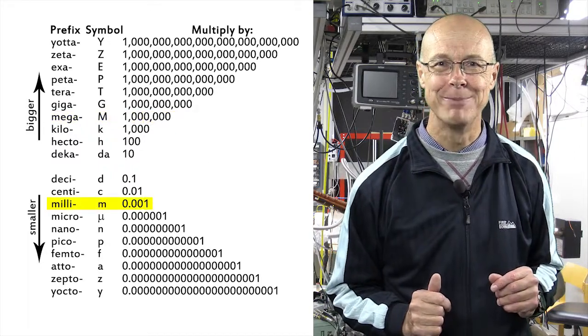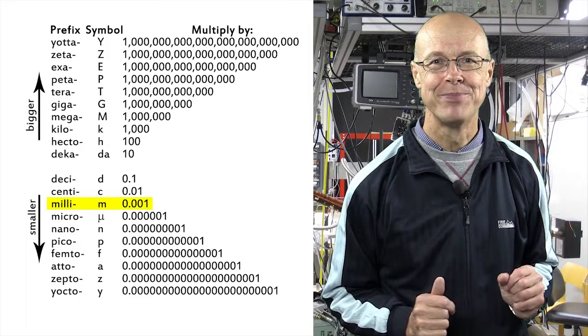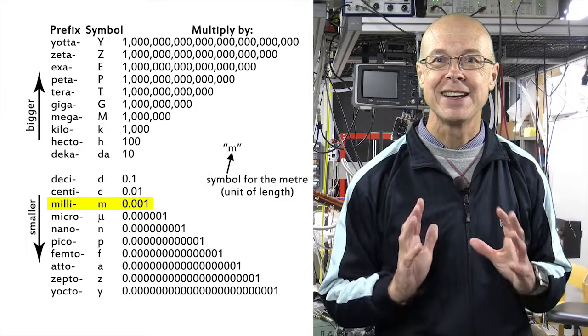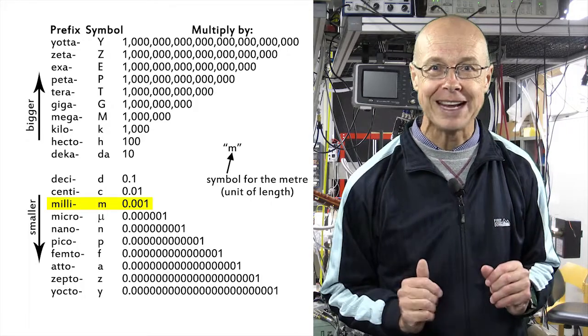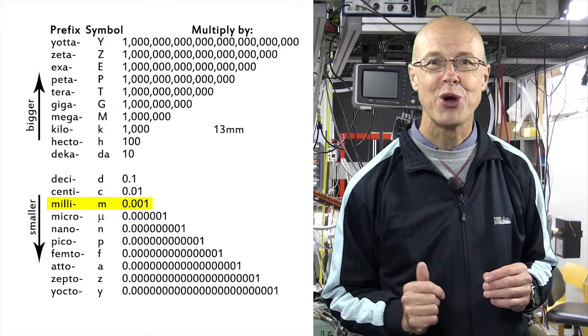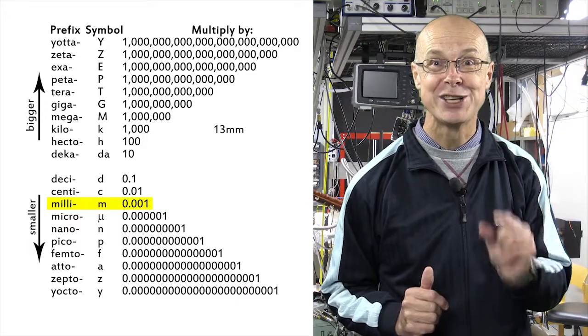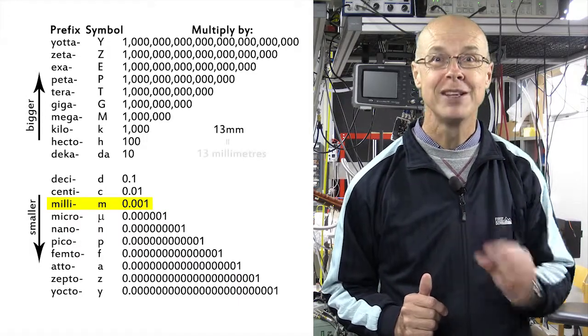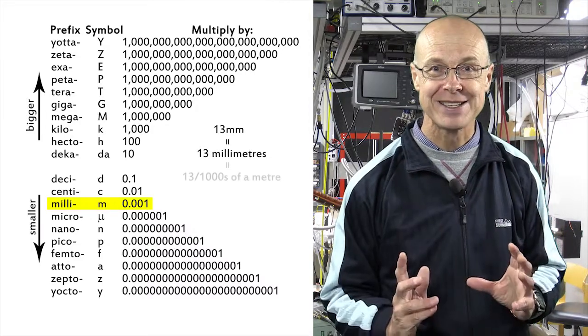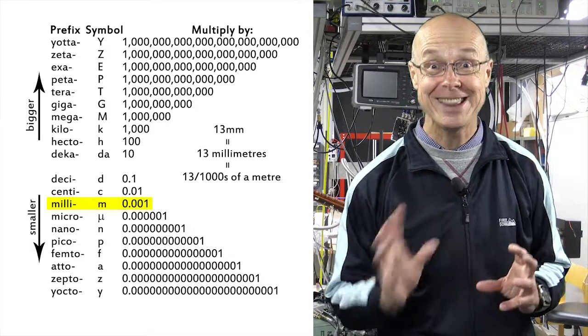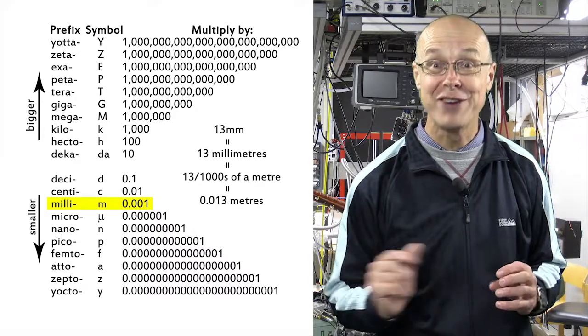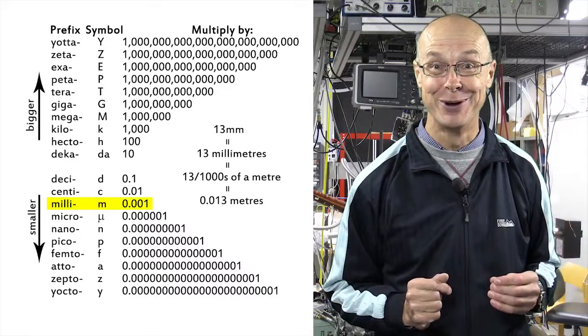Milli, on the other hand, has the symbol small m. Actually, the meter, which is the basic metric unit of length, also has the symbol small m. So when you see, for example, 13 small m small m, you should read that as 13 millimetres, which is 13 thousandths of a metre, or 0.013 of a metre, if you prefer decimals.